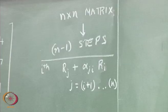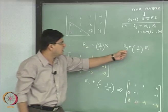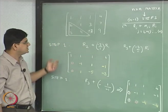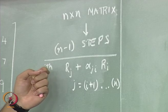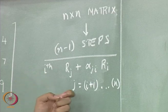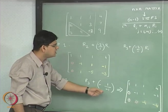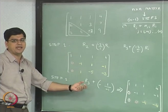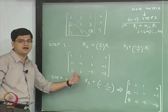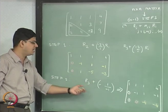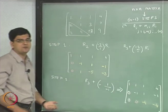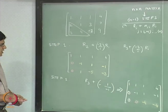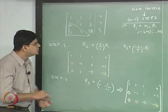In the second step, i equals 2, so j is going from 3 to 3. That means we will do only one row operation and that is going to be R3 plus negative of a_32 divided by a_22 multiplied by R2. So that was the row operation that we did.